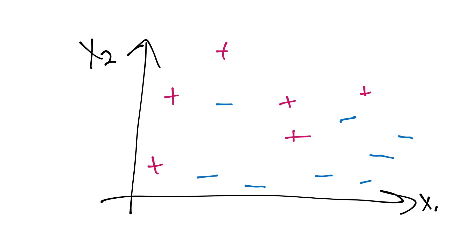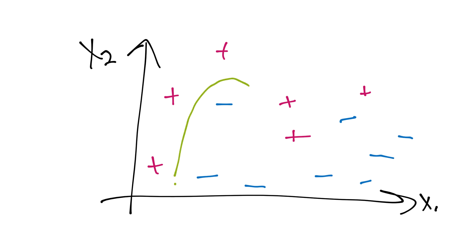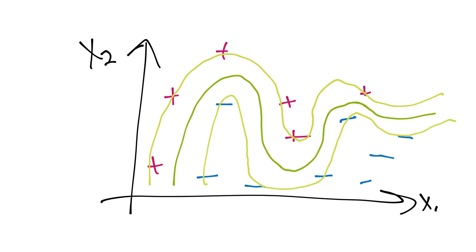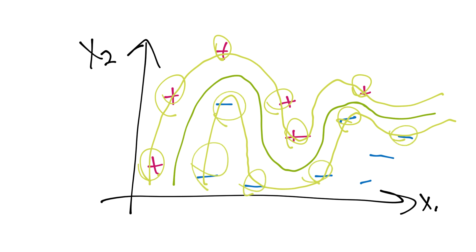Imagine you've got this dataset I've drawn here — is this linearly separable? No, there is no straight line we can draw to separate it. But imagine we run the RBF and come up with a decision boundary that looks something like this. We'd have the support vector hyperplanes coming through here, and if we circle all of our support vectors — almost every point in this entire dataset is a support vector.